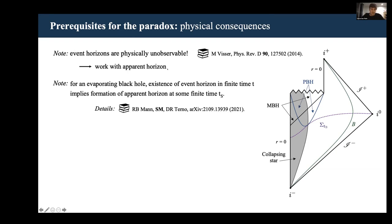But now you might say, well, to formulate the paradox, we really need an event horizon, because as we discussed on the previous slide, we need a notion that's not foliation dependent. And this is true, but it's possible to show that for an evaporating black hole, the existence of an event horizon in finite time t actually implies the formation of an apparent horizon in some finite time ts.